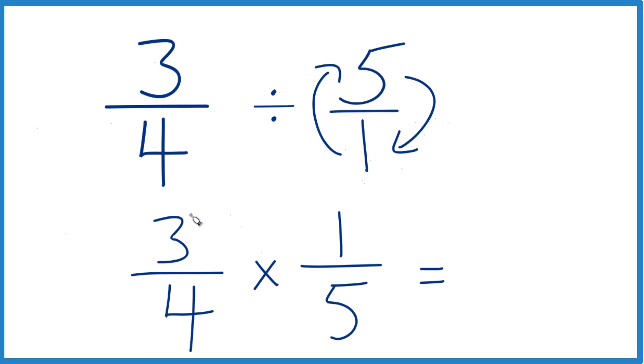Now, with fractions, we multiply the numerators. 3 times 1 is 3, and then we multiply the denominators. 4 times 5 is 20.